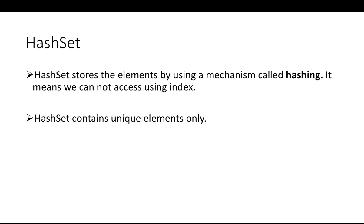Let's talk about the three different classes which implement the Set interface. HashSet is a separate class which stores elements using hashing. Hashing is a different technique through which Java stores values — hashing is faster than indexing. HashSet, since it implements the Set interface, will also not allow duplicate values.